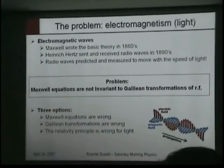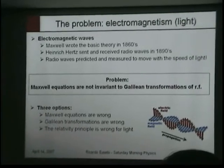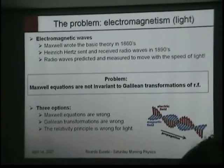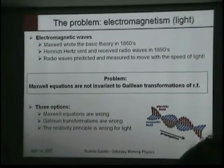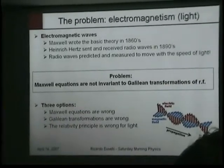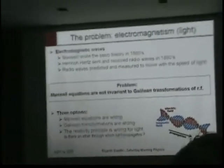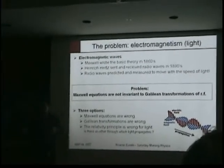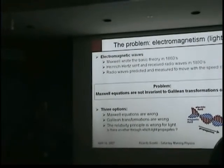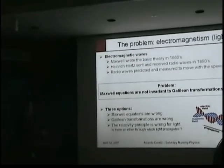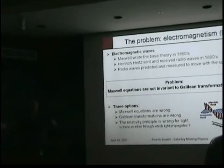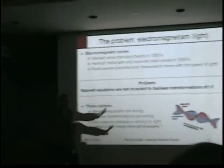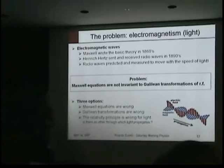Regarding the last option — if the relativity principle is wrong, that means there is one preferred reference frame for light. That's when people brought in the idea of an ether: something permeating the universe that supports the propagation of light, in the same way that water supports the propagation of a wave on top of it.